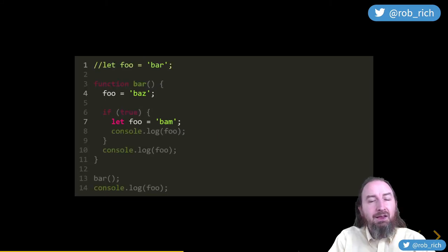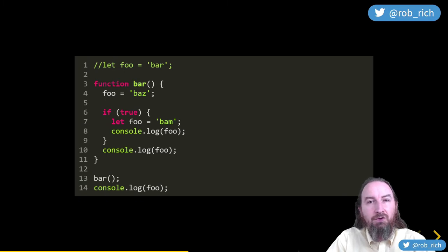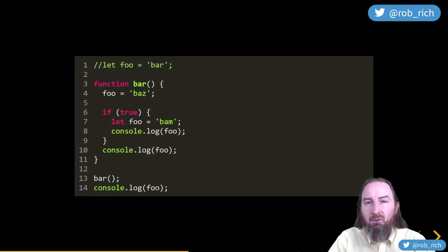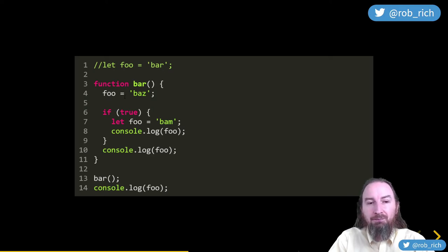Now let's not define the inner variable with let. First phase: just one declaration — the outer one. Execute: call function, go looking for a variable — not in this scope, not in the outer scope, so we define a new global variable foo and set it to baz. Inside the if block, the curly-brace scoped let variable outputs bam, then baz. Out here we climb up to that same global variable and output baz. Wait — did this variable leak outside the function? Yes, because we didn't define it scoped to anything — it was created as a global.